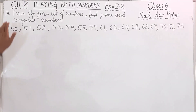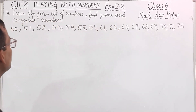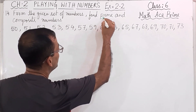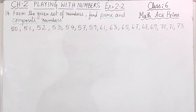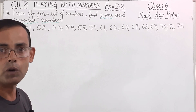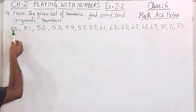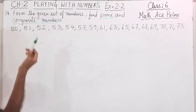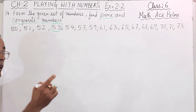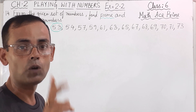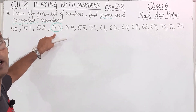Now let us come to question number 14. From the given set of numbers, find prime and composite numbers. If we can select the prime numbers, the rest will be composite numbers. A prime number has only two factors: the number itself and 1. So is 50 a prime number? No. 51? No, you can divide it by 3. 52? No. 53? Yes — 53 has only two factors: 53 and 1.